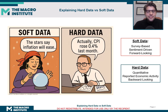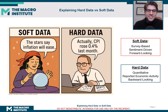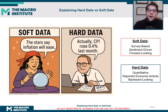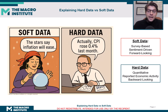I think this cartoon sums things up pretty well. Soft data is the fortune teller saying that inflation will ease in the future, but hard data is the accountant who's looking at the data and says, well, actually, CPI — so inflation — was up 0.4% last month.